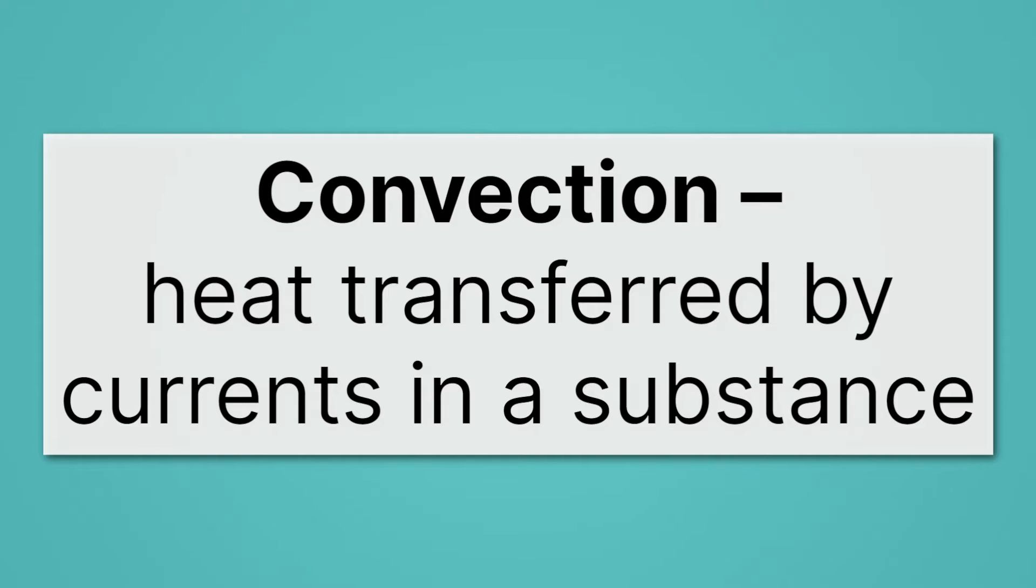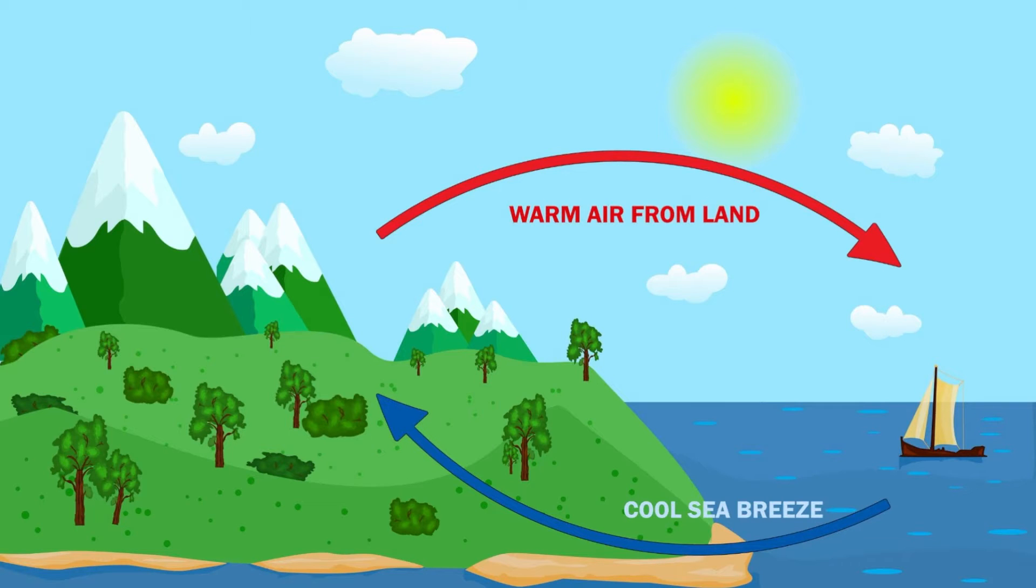So, for example, take breezes. They're a good example of this convection. Here we have a cold sea, and there's a breeze coming off of it to the warm land. Or you might have a breeze coming from the warm land to the cool sea. And this temperature change brought about by the breezes is a form of convection.